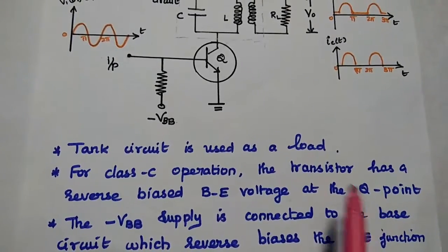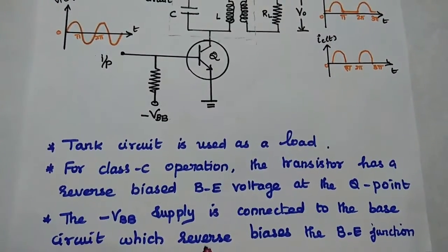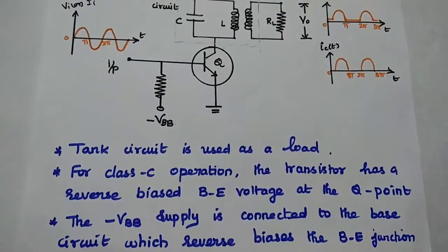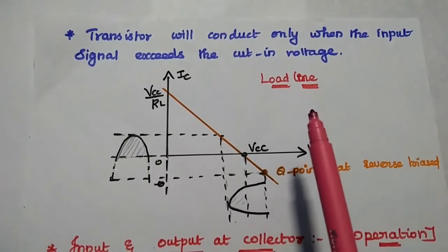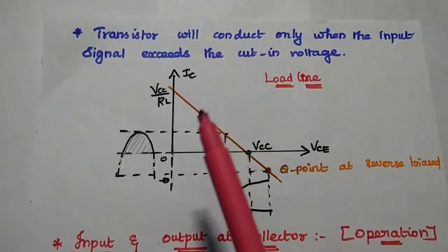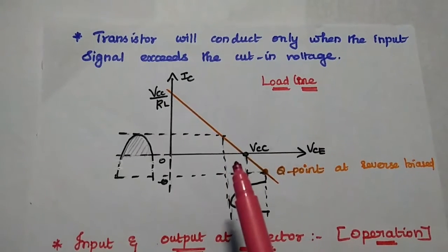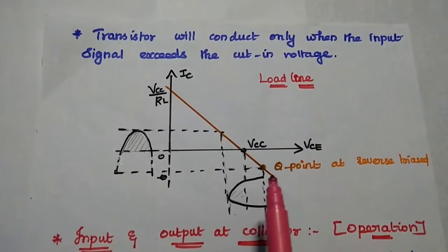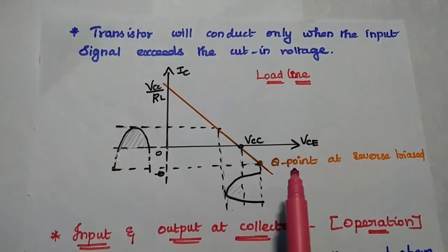Here we can get the Q point in the reverse biased condition. The minus VBB supply voltage is connected to the base circuit, which always reverse biases the base-emitter junction. The transistor will conduct only when the input signal exceeds the cut-in voltage. The load line is drawn between the output characteristics IC and VCE. We have to select the transistor bias and AC input signal such that the Q point is present just below the X axis, that is in the reverse biased condition.